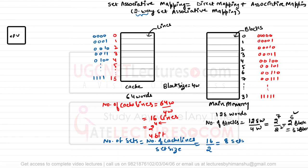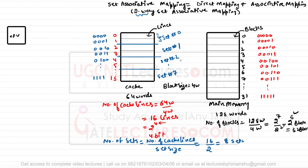Every set contains two lines. Set 0 runs from here to here, then set 1, set 2, up to set 7, for a total of 8 sets. To represent the set address we require 3 bits, because 3 bits give 8 combinations. Set 0 address is 000, set 1 is 001, set 2 is 010, up to set 7 which is 111.